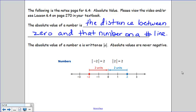The absolute value of a number is written as the absolute value of A. So whenever you see these lines on the outside of a number, that means find the absolute value of the number. Absolute values are never negative. They are always positive.